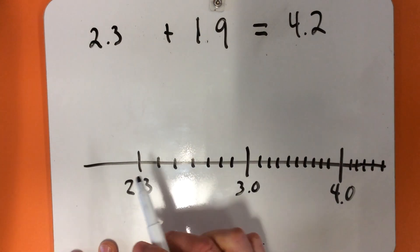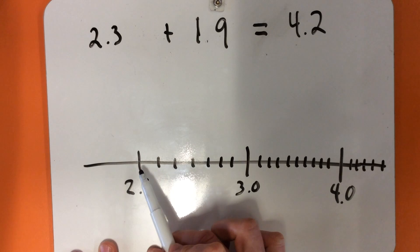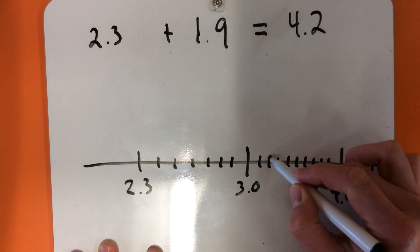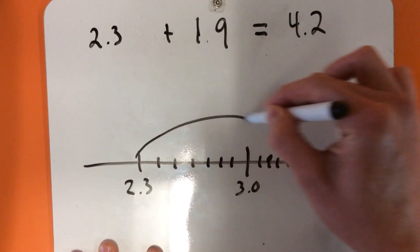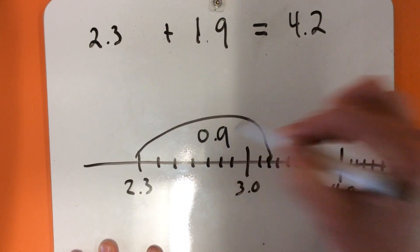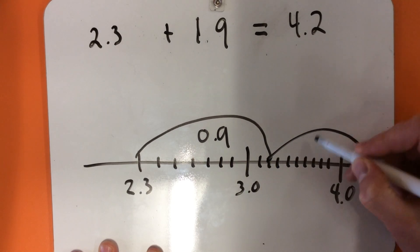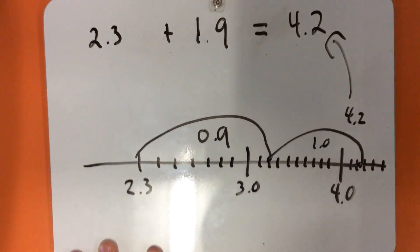So I'm going to go up by 9 tenths first: 1, 2, 3, 4, 5, 6, 7, 8, 9. So there, and that's 0.9. And I'm going to go up one whole more from 3.2 to 4.2, just like there.